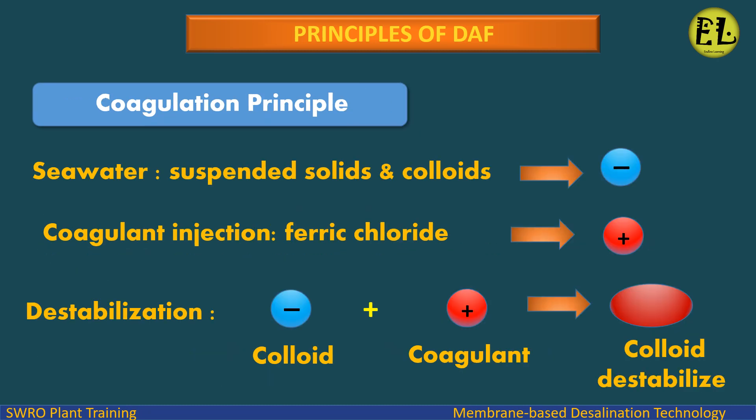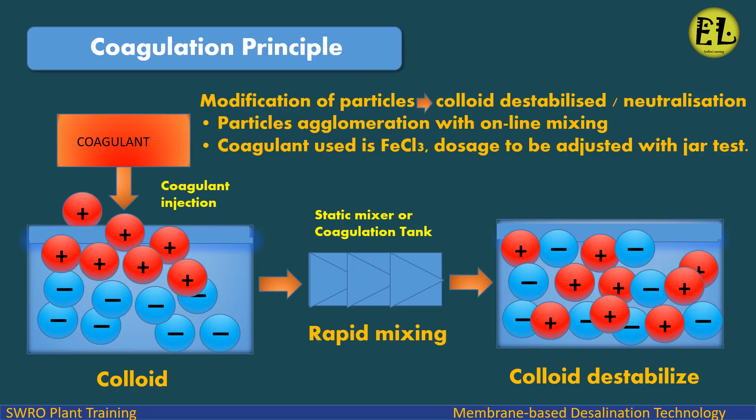Coagulation principle: Seawater suspended solids and colloids carry a negative charge. Coagulant injection — ferric chloride (FeCl3) carries a positive charge — causes destabilization: colloid plus coagulant yields a destabilized colloid. This modification of particles leads to colloid destabilization and particle agglomeration with online mixing. The coagulant used is FeCl3, with dosage to be adjusted via jar test.